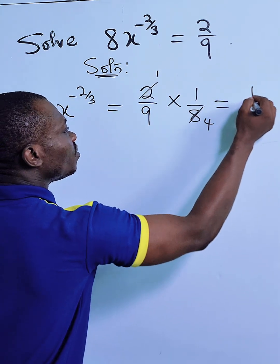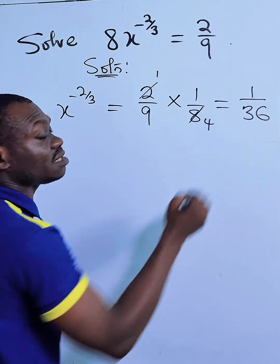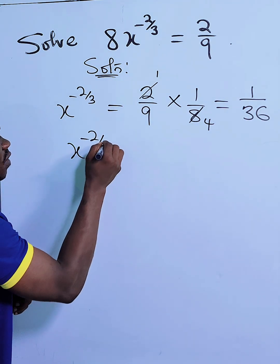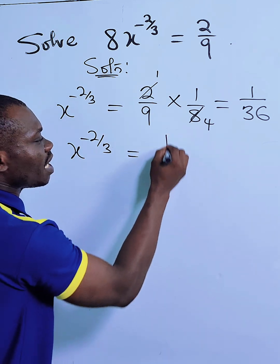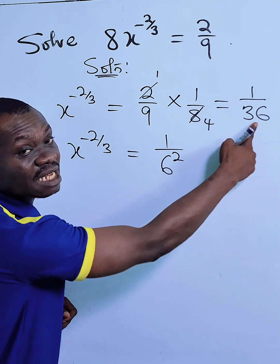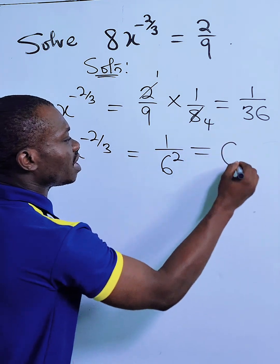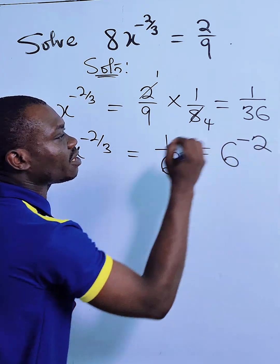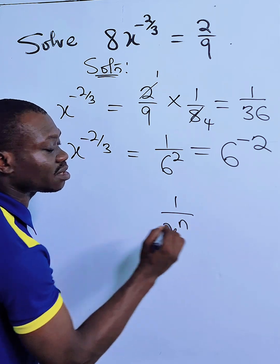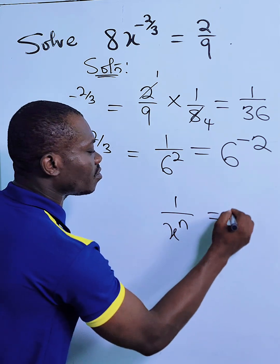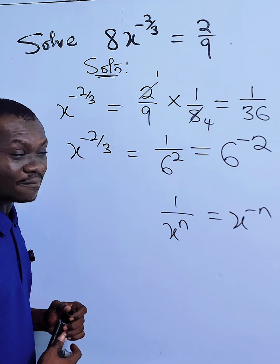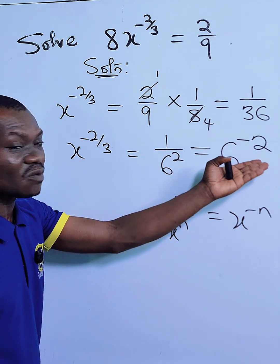That gives me 1 over 36. I know that 1 over 36 can be written as 1 over 6 to the power of 2, which is the same thing as 6 to the power of minus 2, following the rule that says 1 over X to the power of N equals X to the power of minus N.